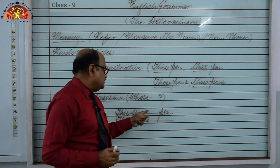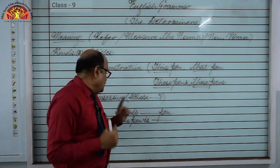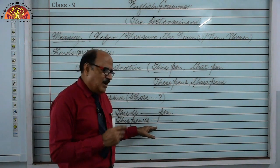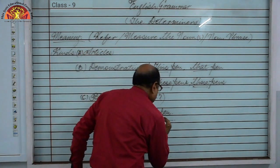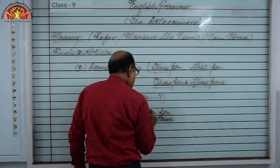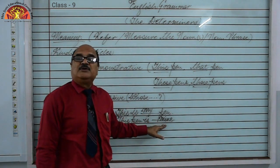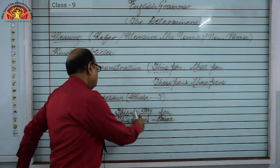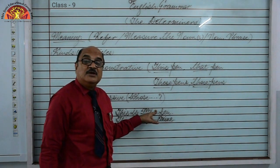Look — 'whose pen? My pen.' But can we write 'this pen is my'? Of course not, it looks odd. So the most suitable word would be 'this pen is mine.' What is the difference? 'Mine' is a possessive pronoun, not a possessive adjective. But 'this is my pen' — here 'my' is a possessive adjective, so it is a possessive determiner.